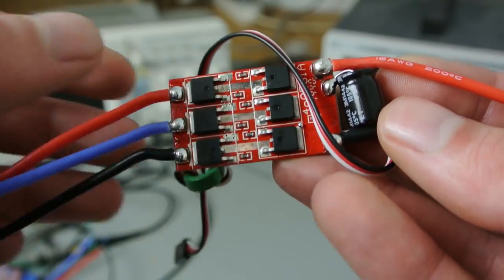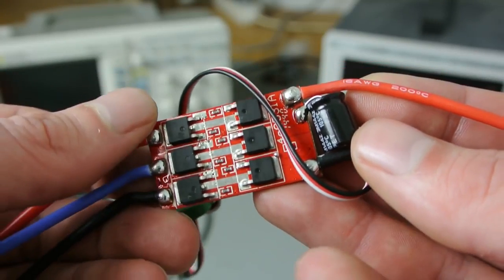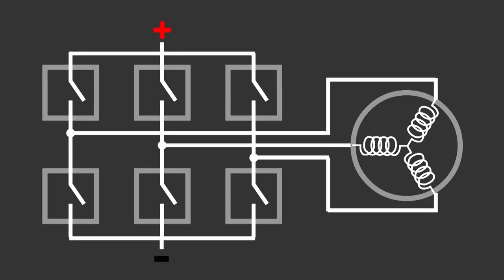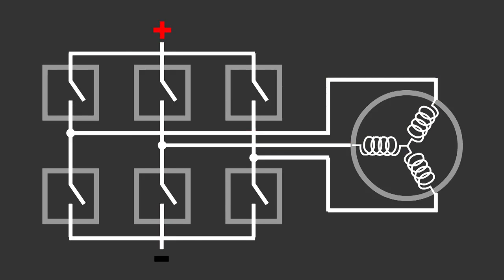It's actually quite simple once you know it. The six big components you see on the back of the ESC are N-channel MOSFETs. You can think about them as switches you can control with a microcontroller. They are connected to the motor in such way that you can run the current in any direction you want through the motor coils. So by opening and closing those switches at the right time, in the correct sequence you can rotate your motor.